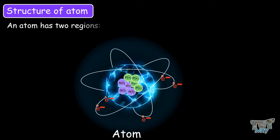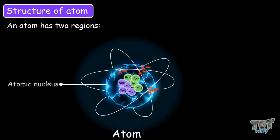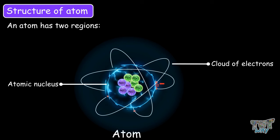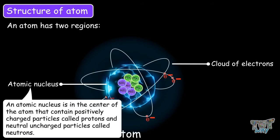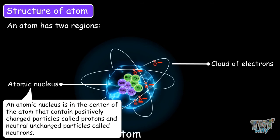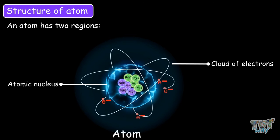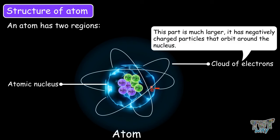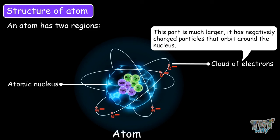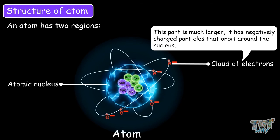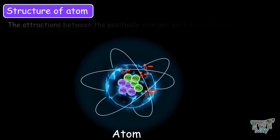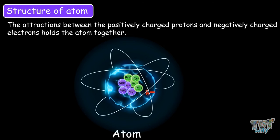An atom consists of two regions: the atomic nucleus and the cloud of electrons. The atomic nucleus is the center of the atom and contains positively charged particles called protons and neutral, uncharged particles called neutrons. The electron cloud is much larger and contains negatively charged particles that orbit around the nucleus. The attraction between the positively charged protons and negatively charged electrons holds the atom together.